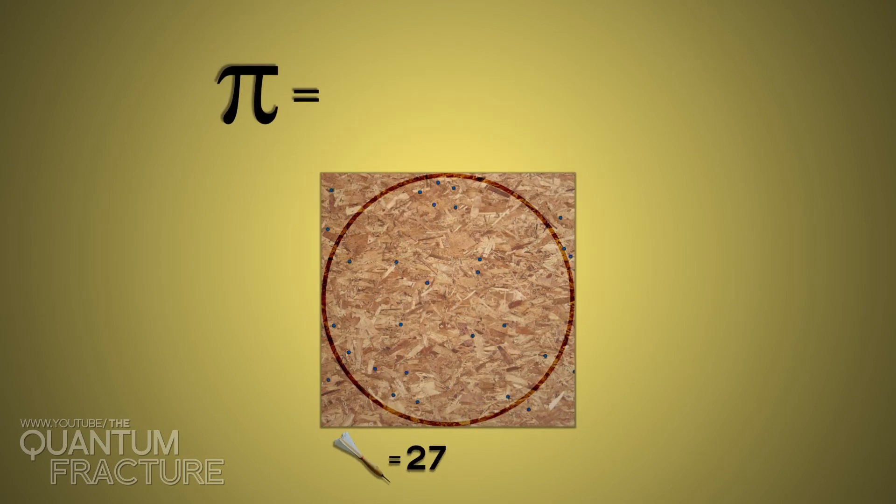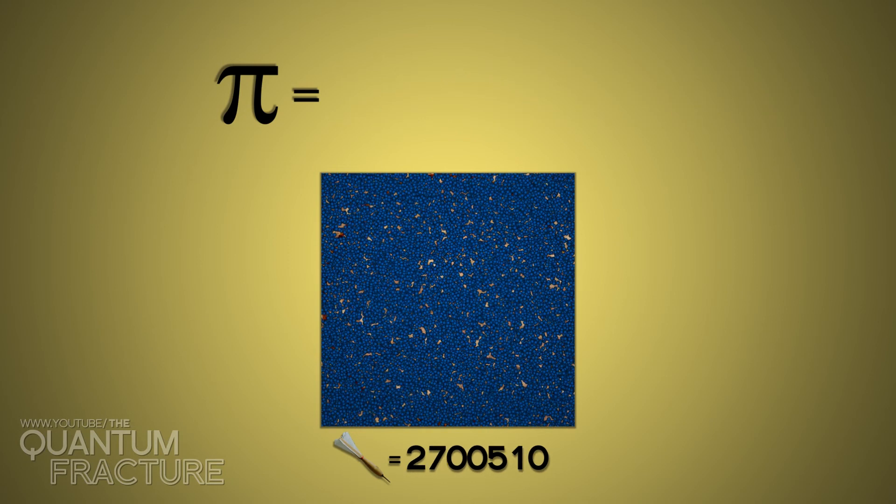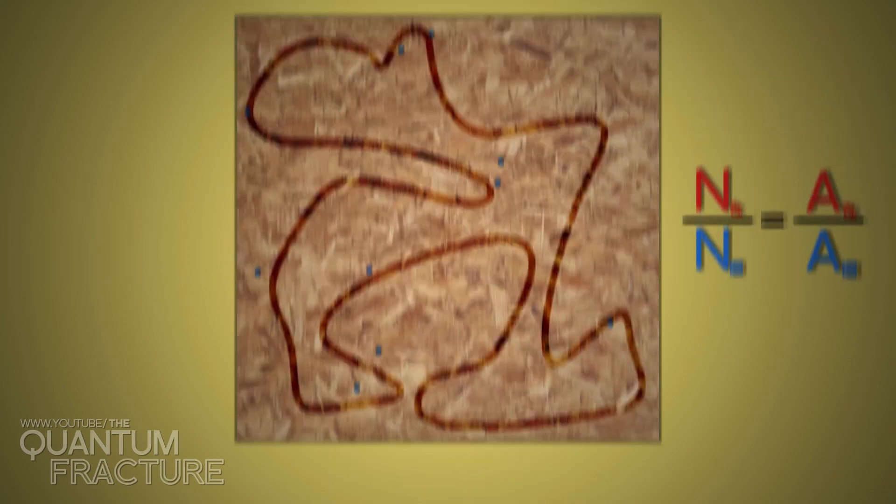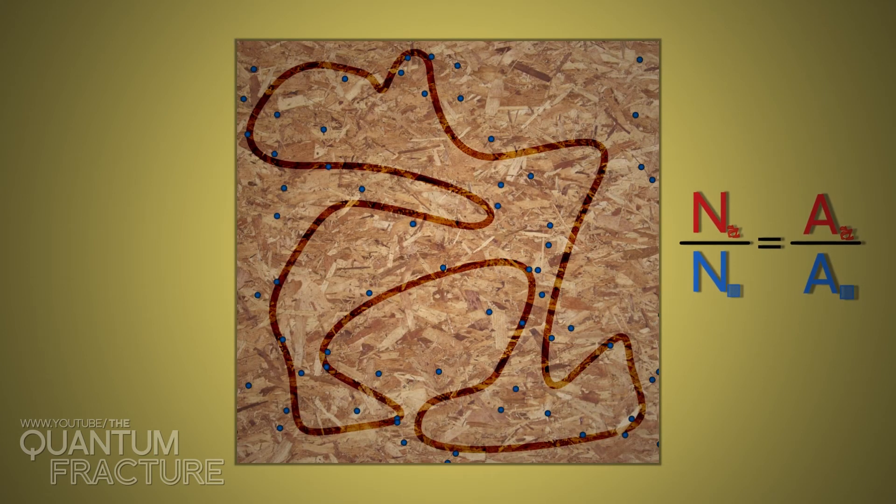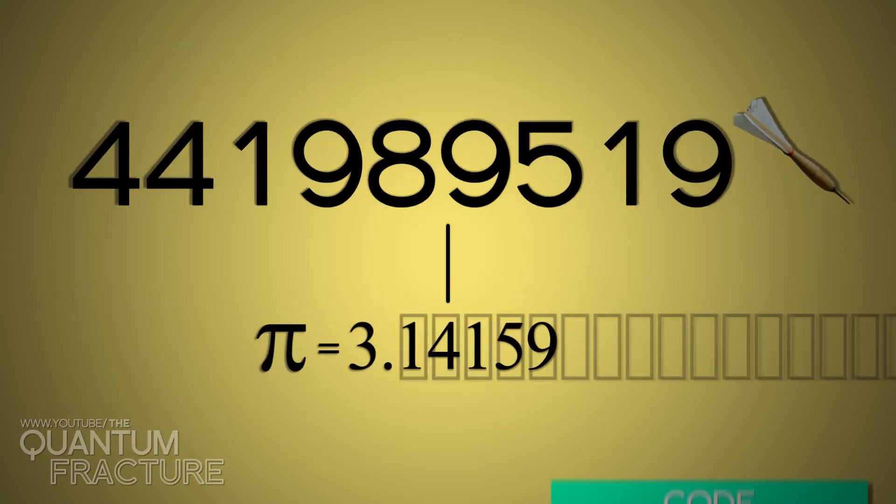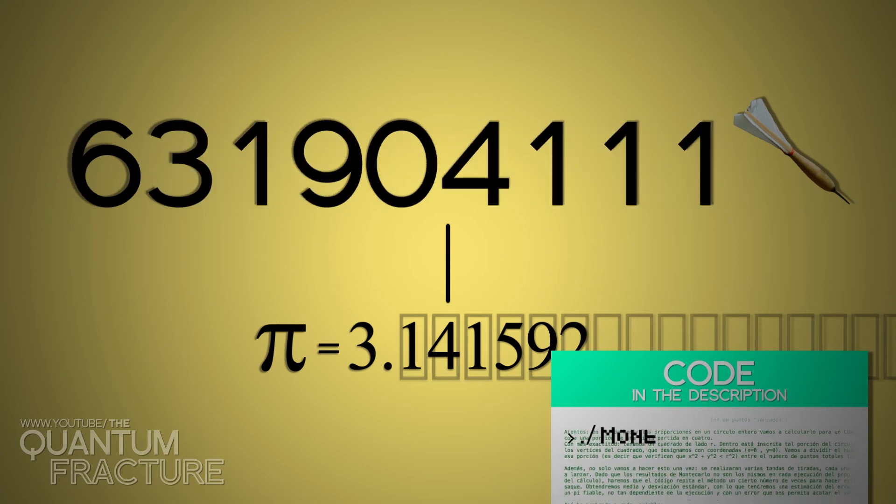If we calculate pi using 50 darts, we'll only get the two first figures, while if we throw 10 million, we will get up to the fourth one. This is one of the disadvantages of Monte Carlo. Although it is great to determine very crazy areas, it needs lots and lots of random numbers to get far. As before, check the code for more details.